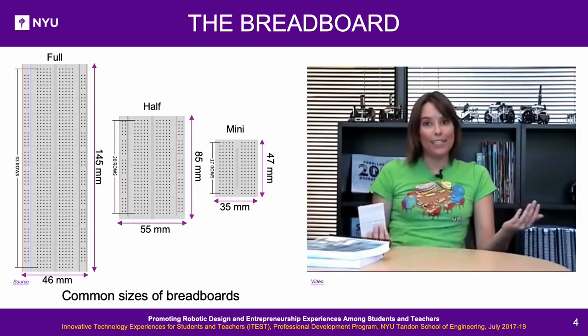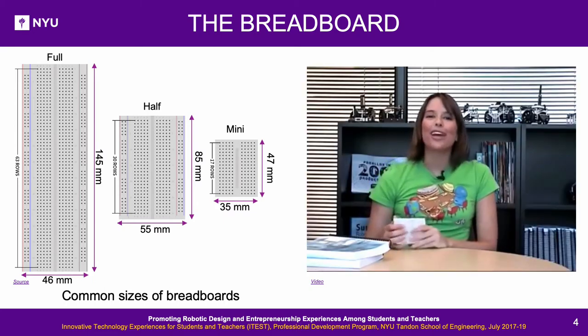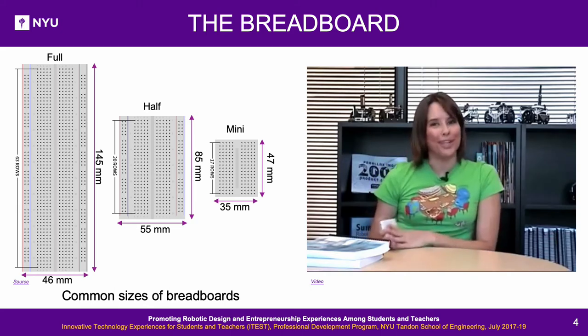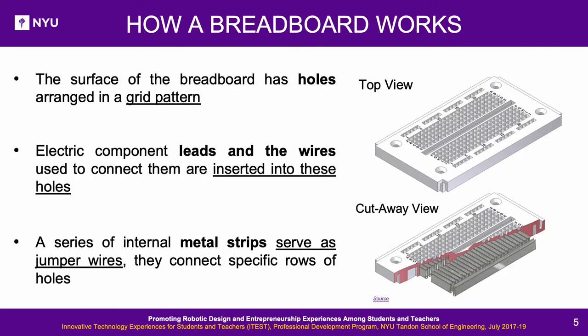And that's the basics of breadboarding — now get out there and start prototyping. On the surface, a breadboard has holes in a grid pattern to insert leads of electronic components like resistors, LEDs, etc. However, on the inside, there are metal strips that serve as conductors for specific rows. The power rails — plus and minus — from 1 to 30 are connected horizontally, even across the gaps between sets of 5 holes.